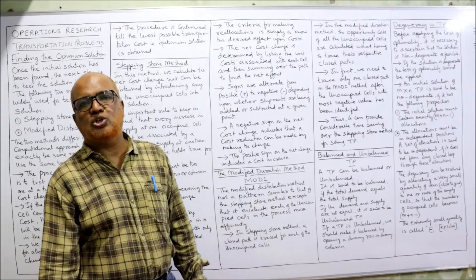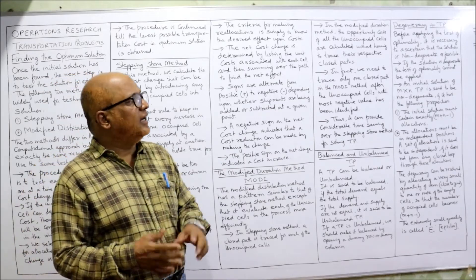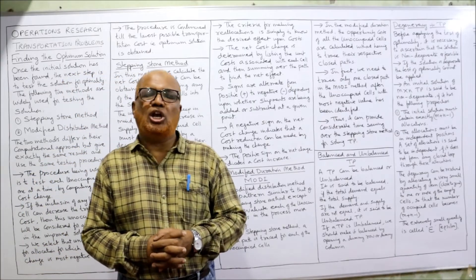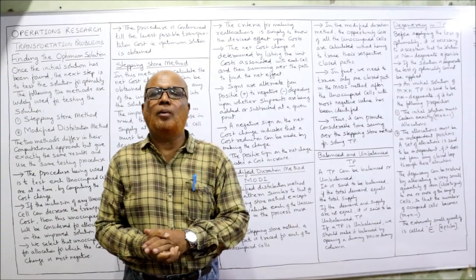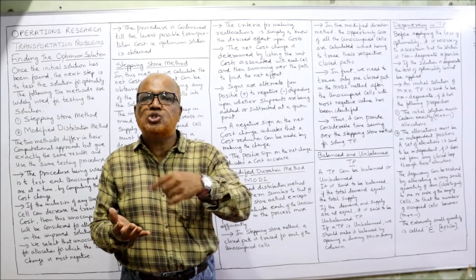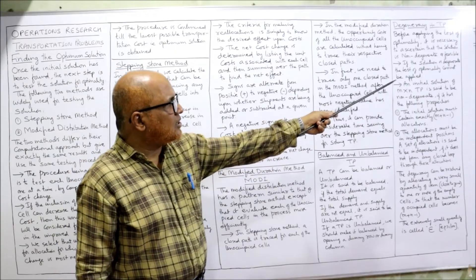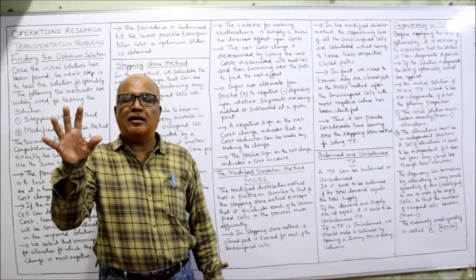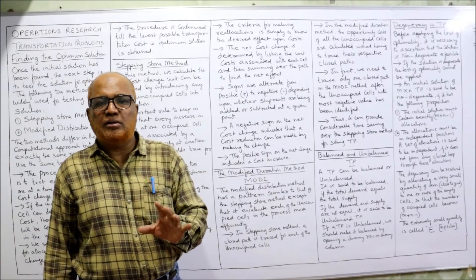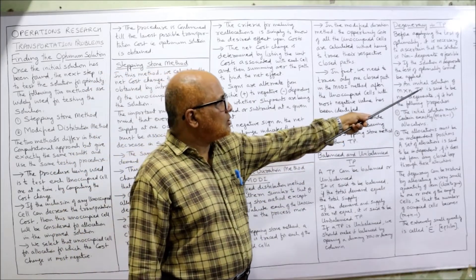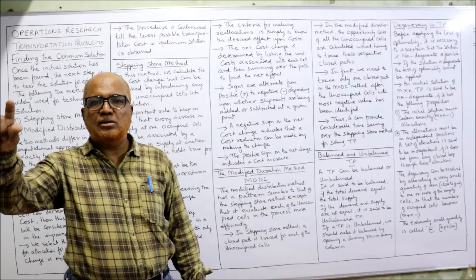The next topic is degeneracy in transportation problems — in examination, theory questions are asked about this. Before applying the test of optimality it is necessary to check that the solution is non-degenerate. After finding the initial basic feasible solution we must check whether it is non-degenerate or not. If the solution is degenerate, the test of optimality cannot be applied — we cannot proceed and must overcome the degeneracy first.